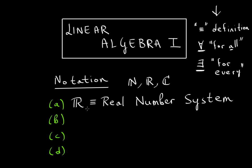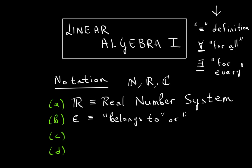The second notation to be comfortable with is this E with a round back — it means 'belongs to' or 'is an element of.' So if you write x ∈ ℝ, that means x belongs to the real numbers.